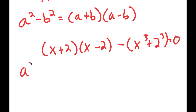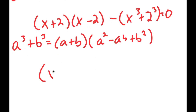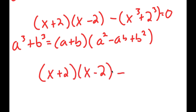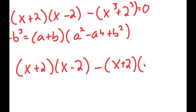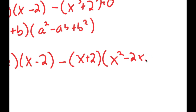And now if I have something in the form a to the power of 3 plus b to the power of 3, this is going to equal a plus b times a squared minus ab plus b squared. And these two properties are really important algebra, so I would recommend memorizing them. So now I get x plus 2 times x minus 2 minus x plus 2 times x squared minus 2x plus 4 is equal to 0.